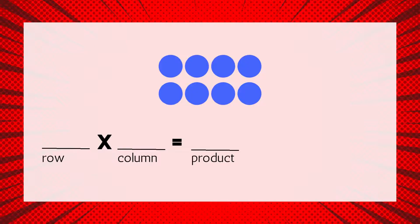Now let's write our multiplication equation. The first factor is two, times the second factor is four, equals the product, which is eight. Our multiplication equation is two times four equals eight.